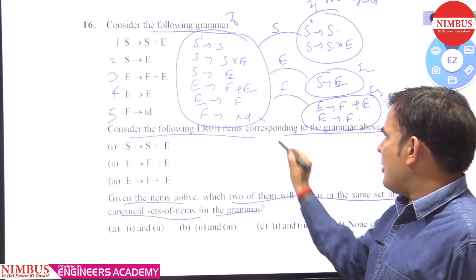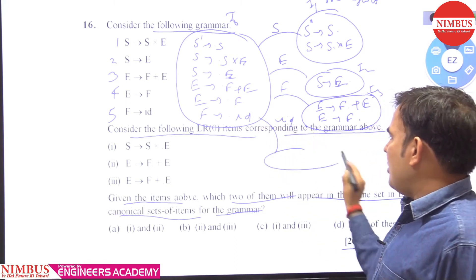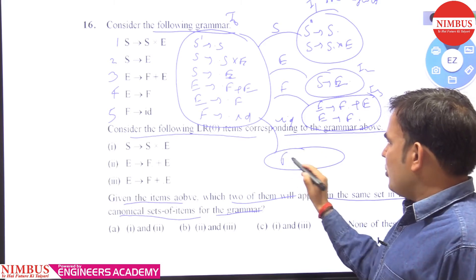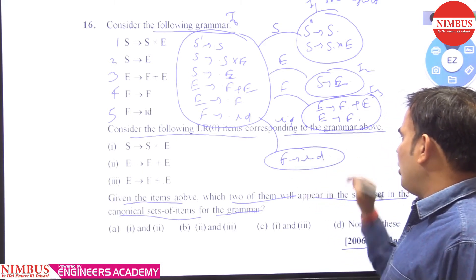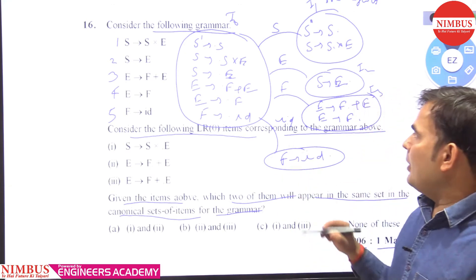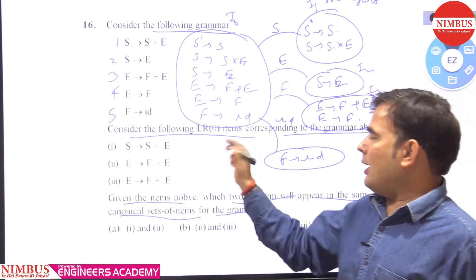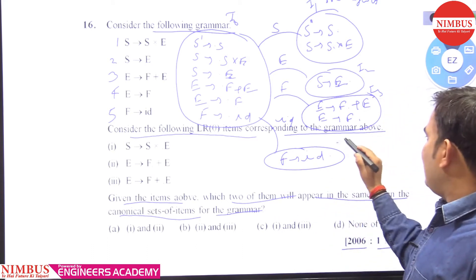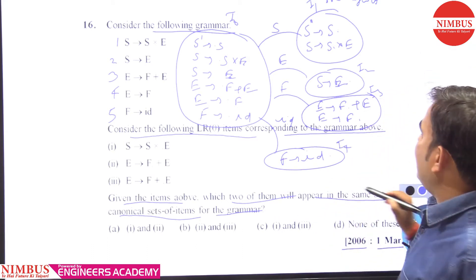When we give input ID, we get F → ID., meaning it reduced. This is production number 5 that is reduced in I4 state.